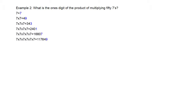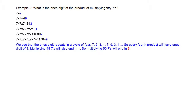Then seven again, and nine again — we seem to be repeating. The ones digit repeats in a cycle of four: seven, nine, three, one, then back to seven, nine, three, one, and so on. So for every fourth product, the ones digit is one. Now multiplying 50 sevens: find the multiple of four closest to 50, which is 48. Multiplying 48 sevens completes whole cycles of four, so the ones digit ends with one.